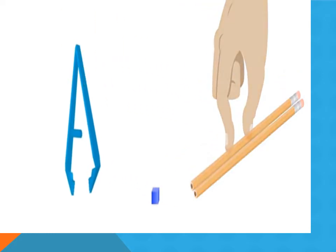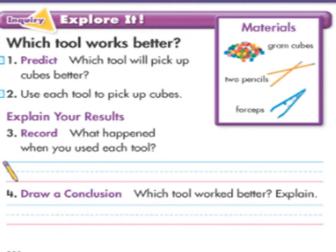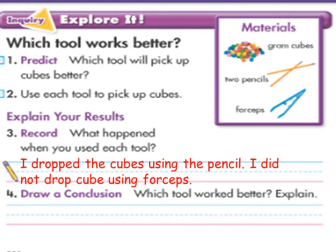Let's try to pick up the gram cube with the pencils. Notice that the gram cube dropped. Now you have to explain your results. You will record what happened when you used each tool, and then draw conclusions. You have to write which tool worked better and why.